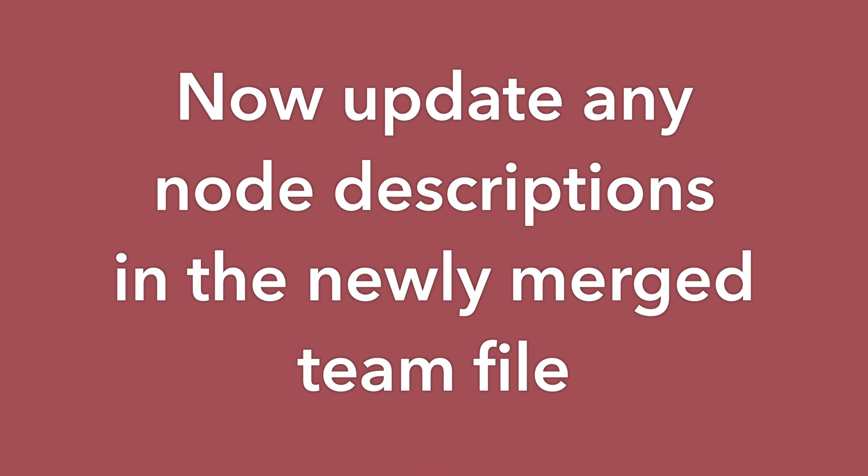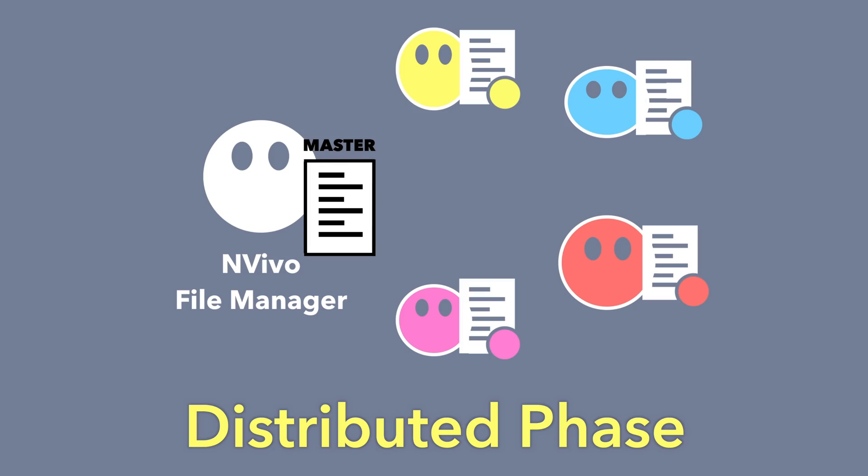Once you've merged and the NVivo file manager has made any changes, and you've met as a team to discuss your coding, another tip is to update any node descriptions in the merged file. If you make changes to node descriptions during the distributed phase — when everybody is working with their own copies — those changes might get overridden depending on how the merge is done. For example, if you merge with the original backup file, it will maintain the original file's node descriptions and lose the copy's changes.